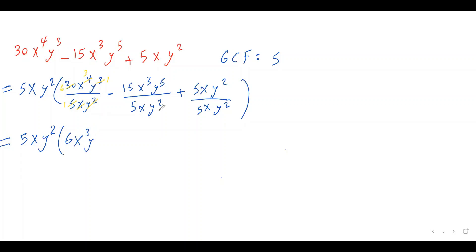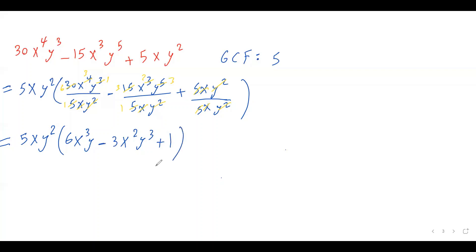For the second term: 15 over 5 is 3, x cubed over x leaves x squared, and y to the 5 over y squared leaves y cubed. So minus 3x squared y cubed. For the third term: 5xy² over 5xy² is just 1. So the factored form is 5xy squared times (6x cubed y minus 3x squared y cubed plus 1). That is our answer — the factored form of that expression.